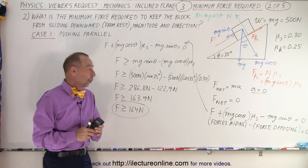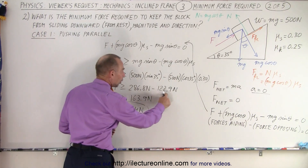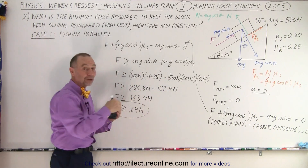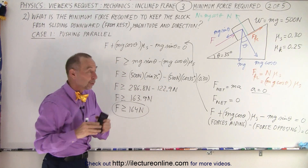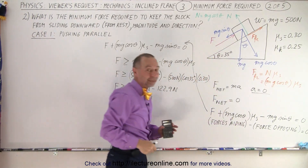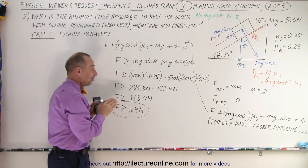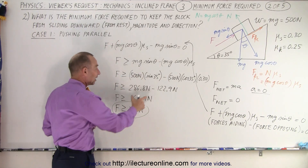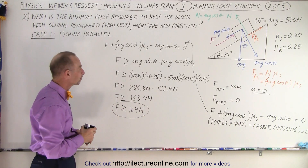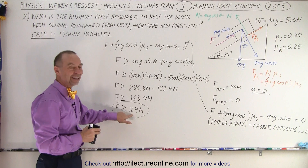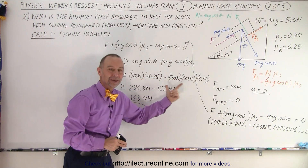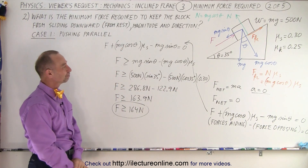These two numerical components — 286.8 and 122.9 newtons — are the same as in the last video, except in the previous video they were added together because we were pushing the block upward, meaning the friction force pointed in the opposite direction. In this case, the friction force is actually aiding you in keeping the block from sliding, so now we subtract the two instead of adding them. That's the only difference — the final answer is not the same, but these two individual components keep appearing.